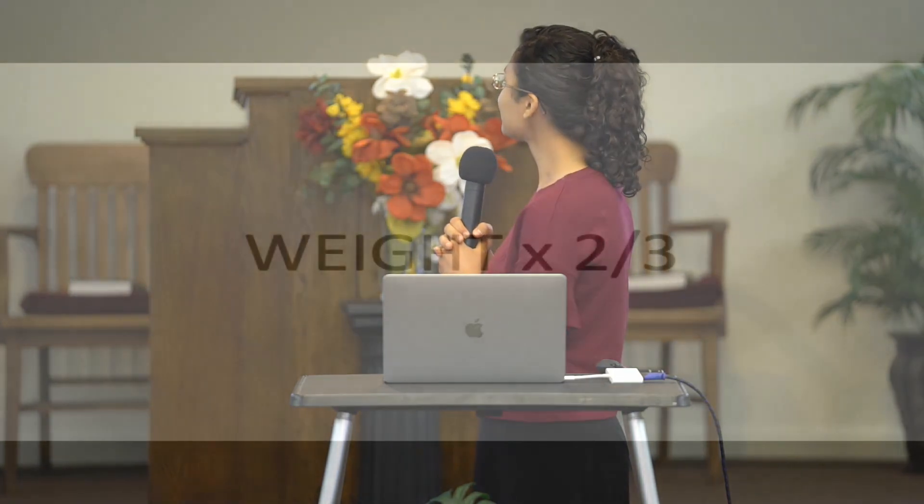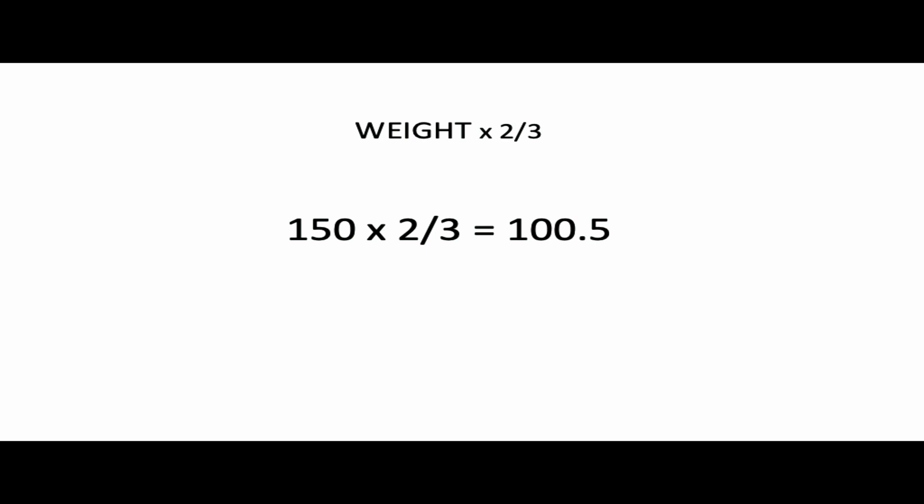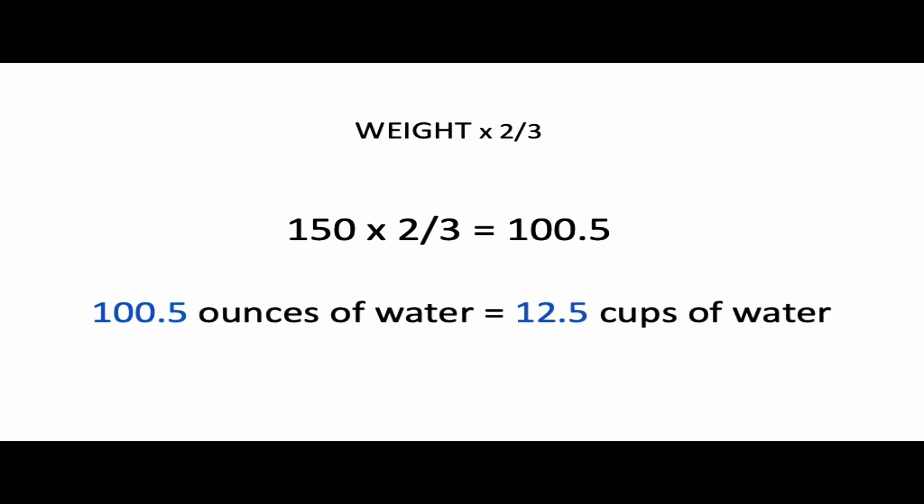How much water do we need? The formula is: weight times two-thirds. For example, a 150-pound person: 150 × 2/3 = 100.5 ounces, which equals about 12.5 cups of water per day. Some tips for drinking more water: don't wait until you feel thirsty — by the time you're thirsty, your body is already dehydrated. Also, keep water drinking and meals separate. Drinking water just before, during, or right after a meal disrupts digestion and your body cannot absorb nutrients properly.